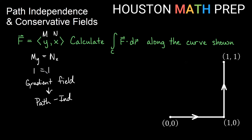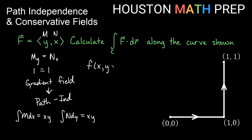What I'll need to do is find my potential function and then plug in my points to shortcut this. My potential function: I find the antiderivative of m with respect to x. If I integrate y dx, that gives me xy plus some constant. If I integrate n dy — integrate x dy — that also gives me xy plus some constant. So my potential function for this vector field is xy.